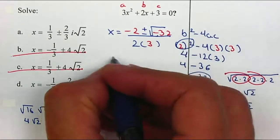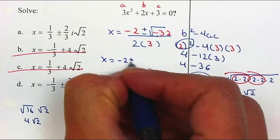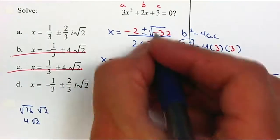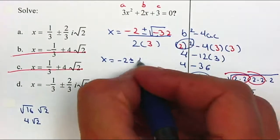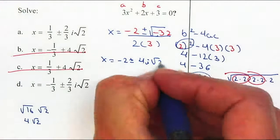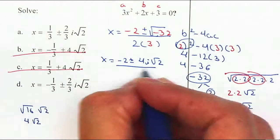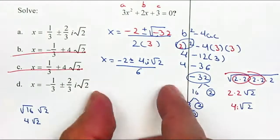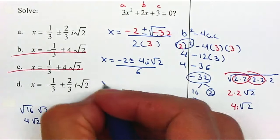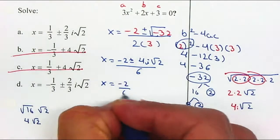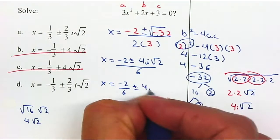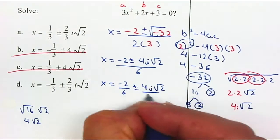But now I must simplify it. X is equal to negative 2 plus or minus the square root of 32 is 4i the square root of 2 divided by 6. I must separate my fractions.